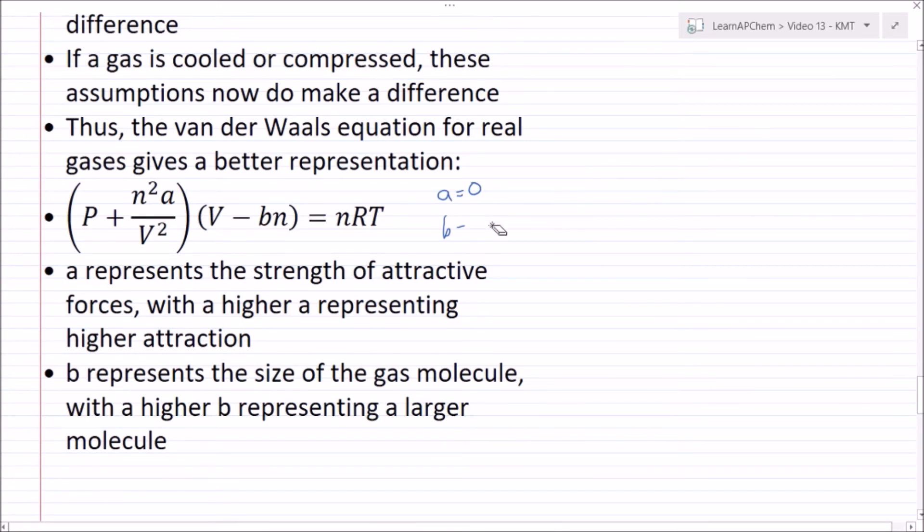Now as far as memorizing this formula for the AP test, I do not think that you have to memorize this formula itself. That being said, you should know what a represents, what B represents, why the van der Waals equation exists and what it tries to get at, as well as what a higher a and B would mean.